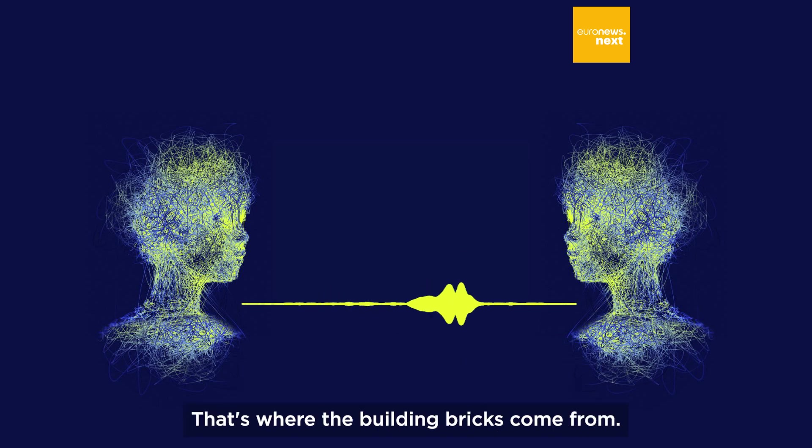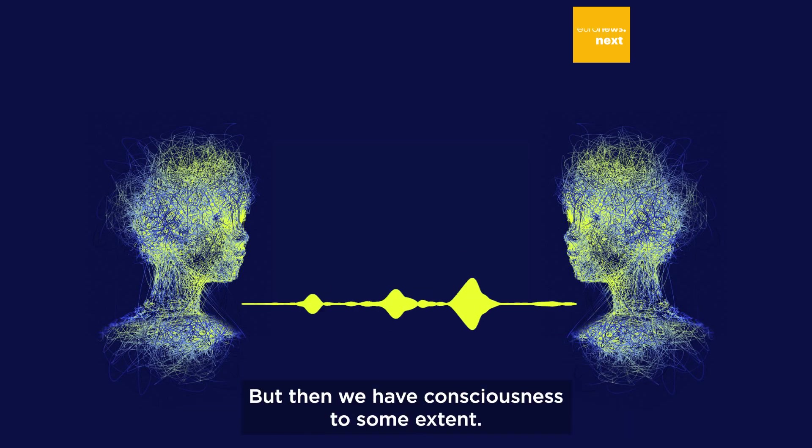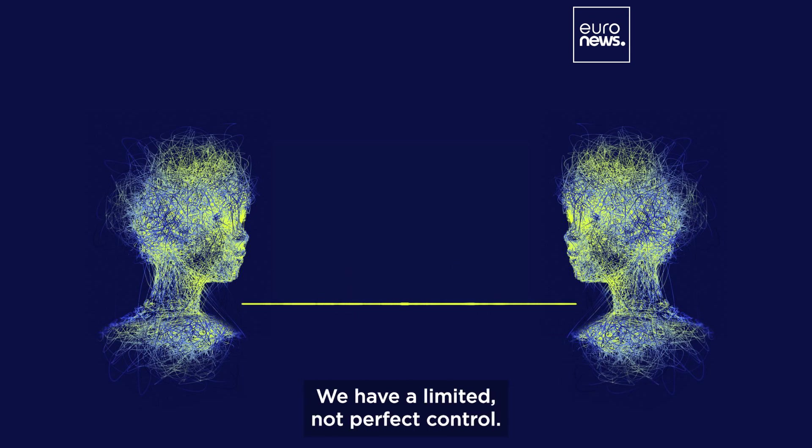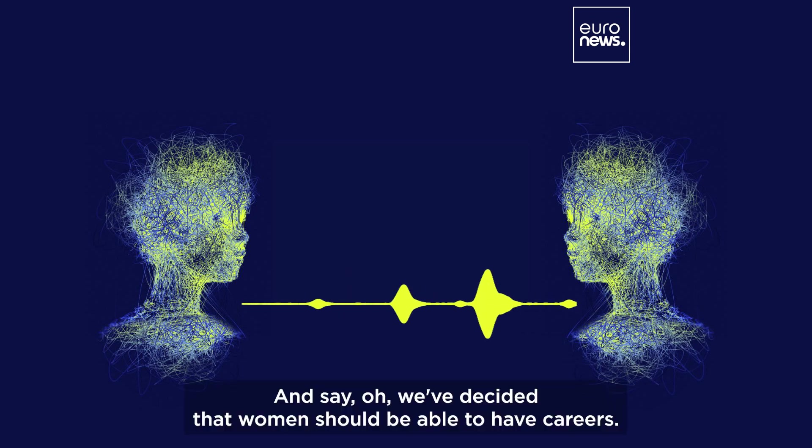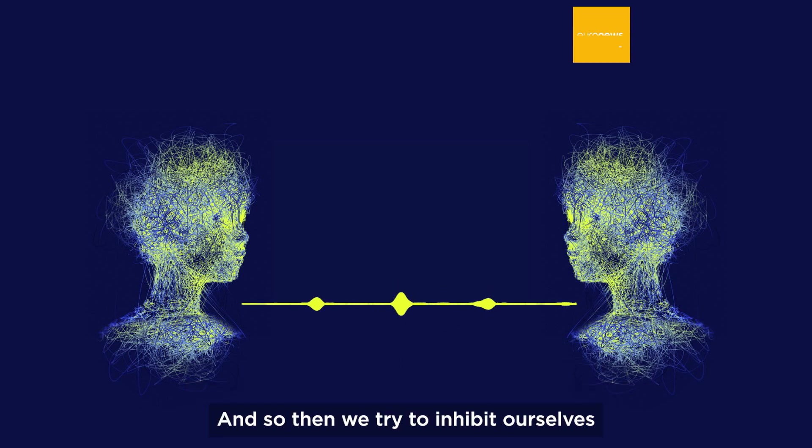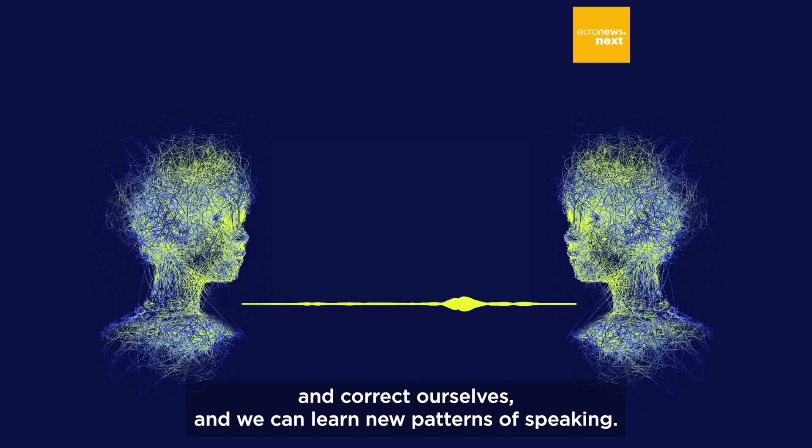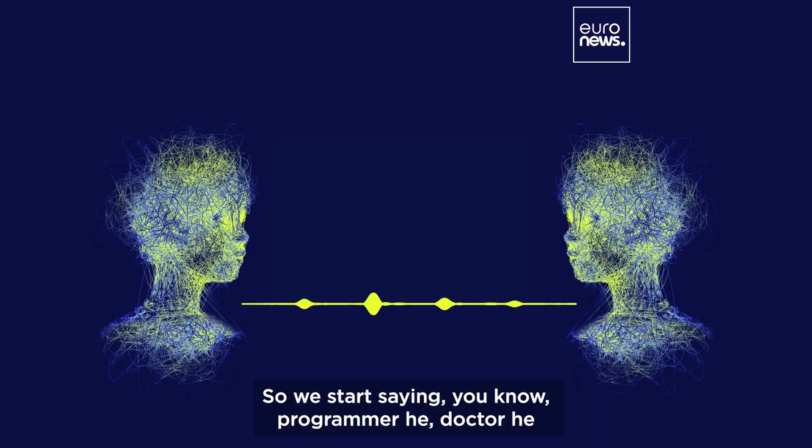To correct the bias, the information the system learns has to catch up with society. We get our intelligence from our experience of the world - that's where the building blocks come from. But then we have consciousness. To some extent, we have limited, not perfect, control and say, 'Oh, we've decided that women should be able to have careers,' and so then we try to inhibit ourselves and correct ourselves. We can learn new patterns of speaking, so we stop saying, you know, programmer he, doctor he, nurse she.